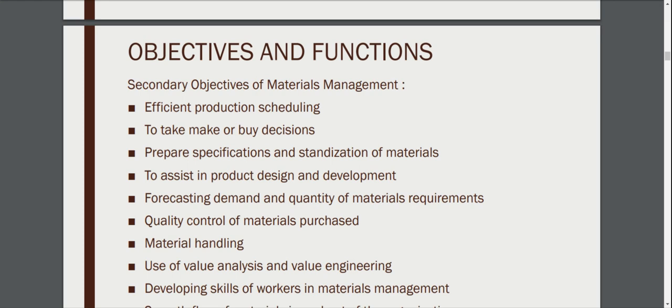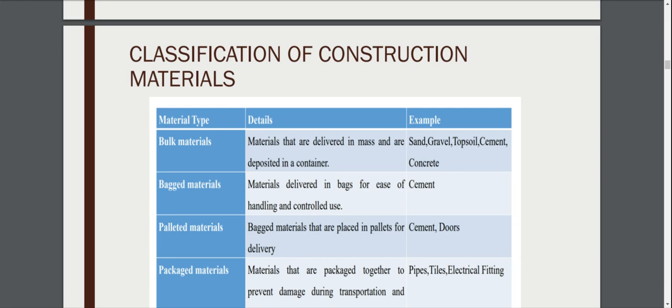For the classification of construction materials, materials can be divided into various types. The first category is bulk materials — materials that are delivered in mass and deposited in a container, for example sand, gravel, topsoil, cement and concrete. Another type is bag materials — materials which are delivered in bags for ease of handling and controlled use, like cement.